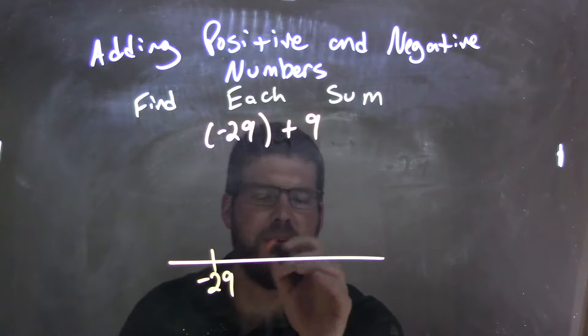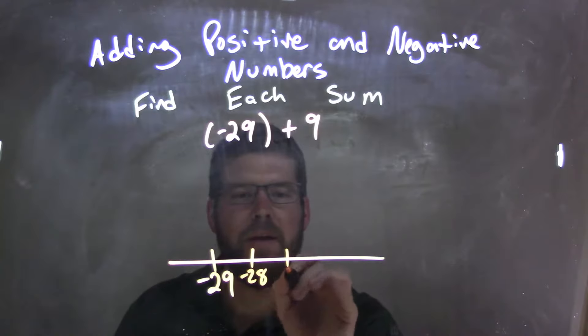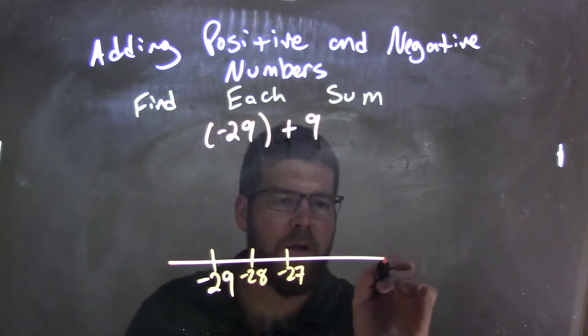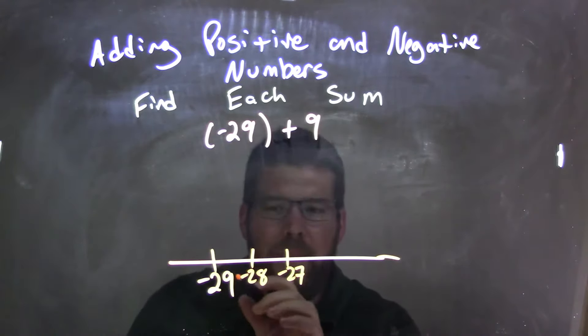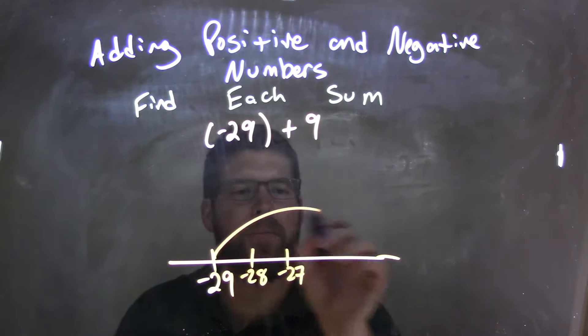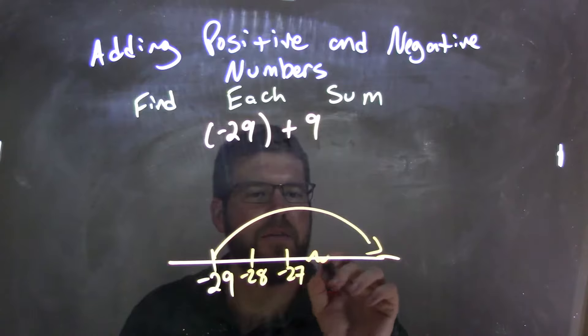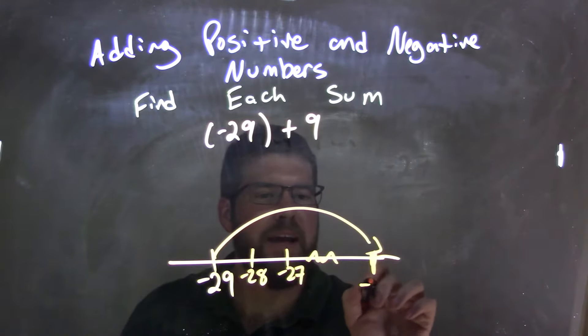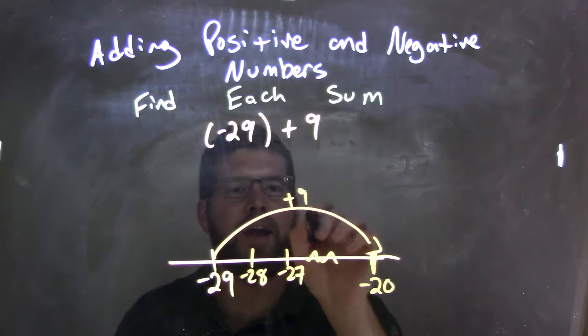So we have negative 28, negative 27, and I could write them all out. But what happens if I really add 9 more units to negative 29? That actually jumps all the way over here to negative 20, and that's adding our 9 units.